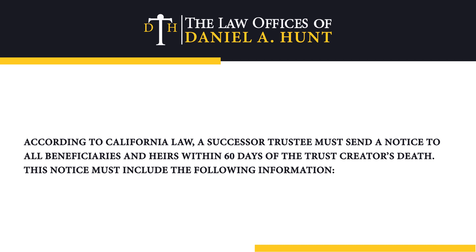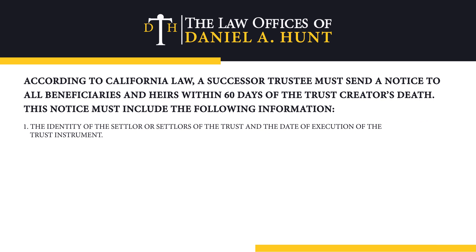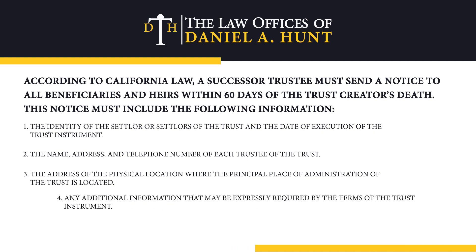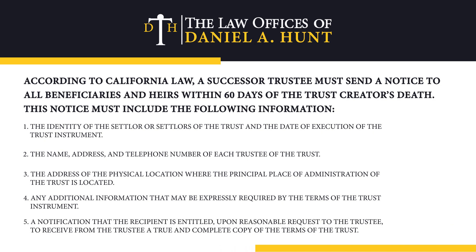According to California law, a successive trustee must send a notice to all beneficiaries and heirs within 60 days of the trust creator's death. This notice must include the following information: the identity of the settler or settlers of the trust and the date of execution of the trust instrument; the name, address, and telephone number of each trustee of the trust; the address of the physical location where the principal place of administration of the trust is; any additional information that may be expressly required by the terms of the trust instrument; and a notification that the recipient is entitled upon reasonable request to receive from the trustee a true and complete copy of the terms of the trust.